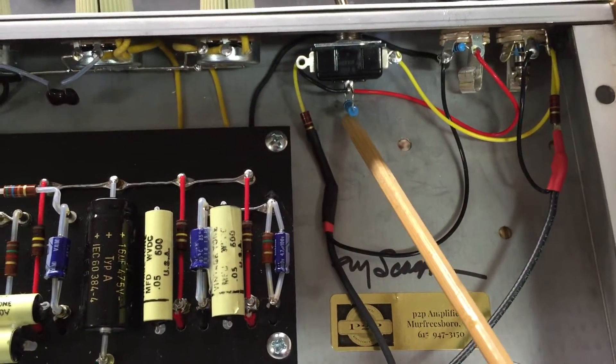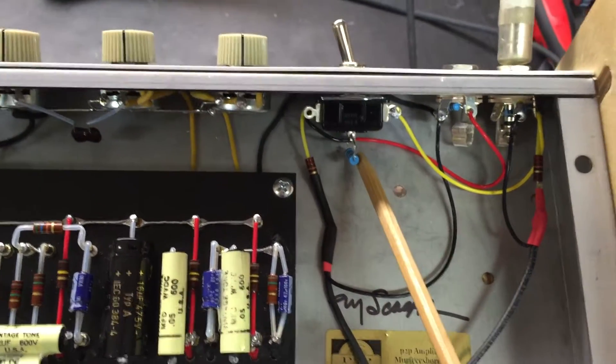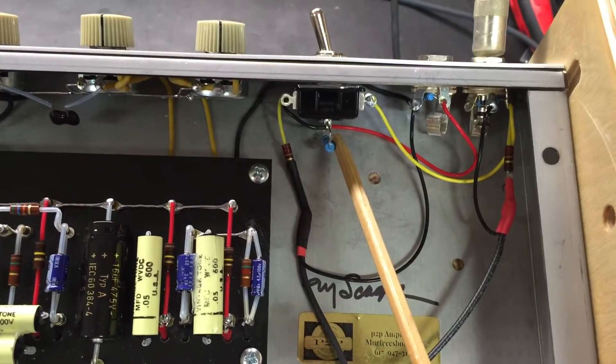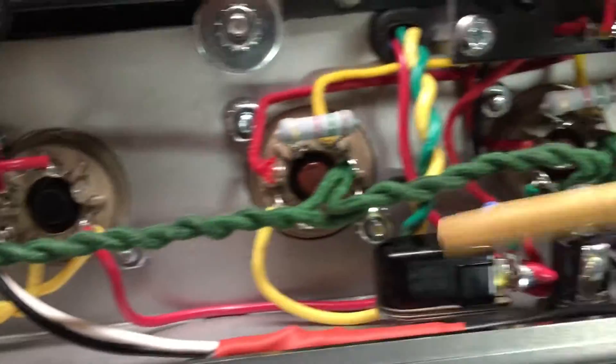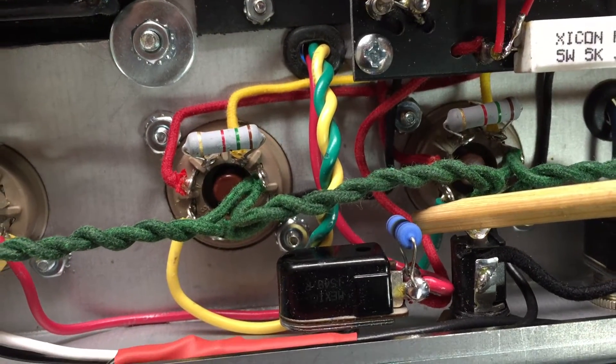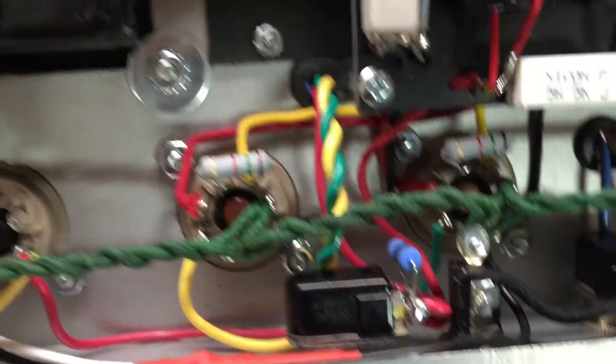Here's your double pull, double throw switch. I threw a 100k resistor on there to help it from popping when you switch it between channels. Same holds true here on your standby switch. You'll see a big resistor there, same deal, that keeps it from popping.